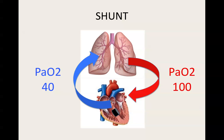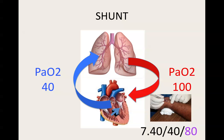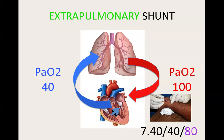Now let's see what happens if I were to put a hole in the wall of the heart that separates the two sides — what we call a septal defect. You can imagine that deoxygenated blood is bypassing the lungs and mixing with arterial blood. So now imagine sampling the arterial blood — of course you're going to get a lower PO2. This is an example of what we call an extra-pulmonary shunt.